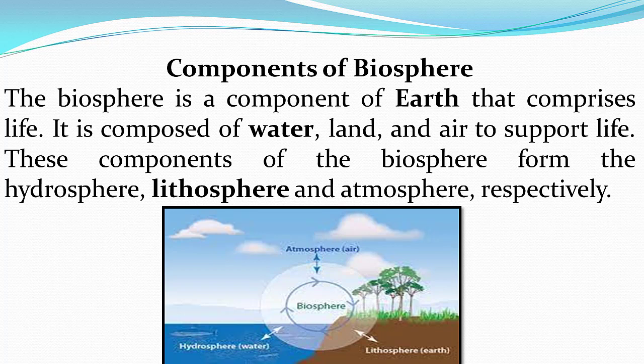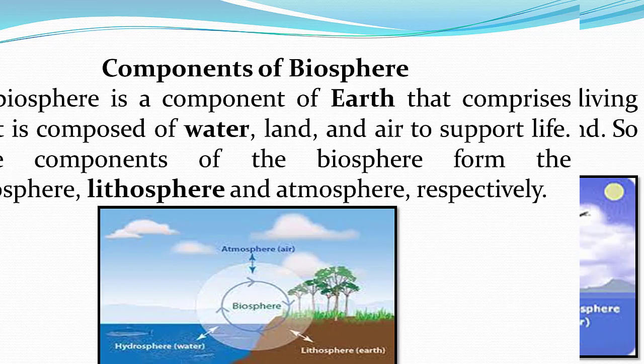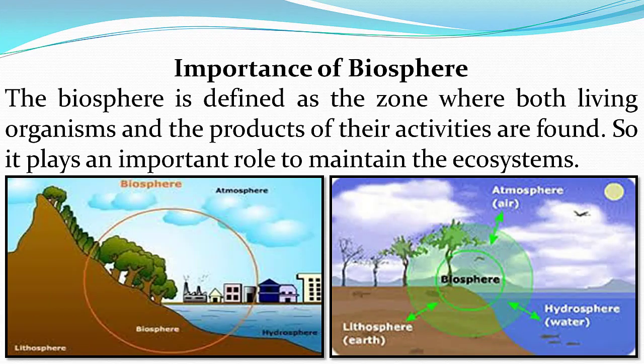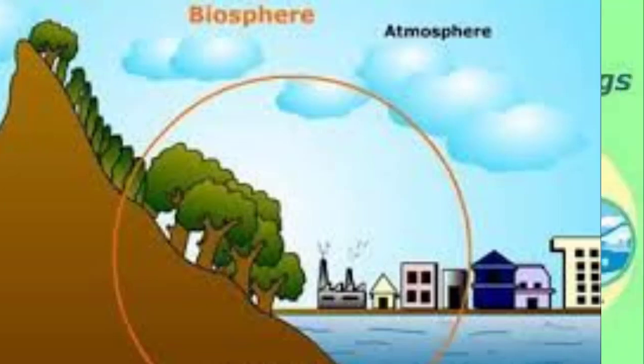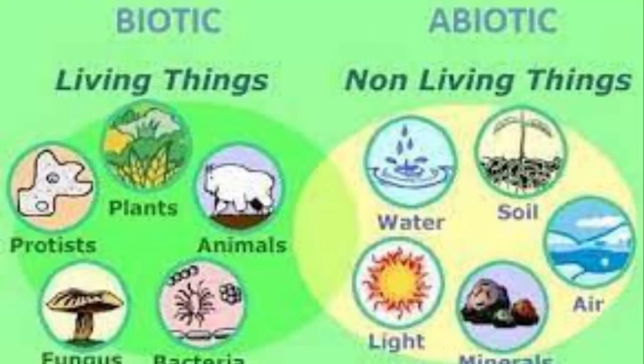Now we will discuss the importance of biosphere. The biosphere is defined as the zone where both living organisms and the products of their activities are formed. It plays an important role in maintaining ecosystems — the life of organisms and their mutual interactions. Biosphere is very important to regulate the climate. It is the layer consisting of air, water, and land forming the ecosystem for living organisms, enabling transfer of energy through the food chain. It is made of biotic and abiotic energy components.